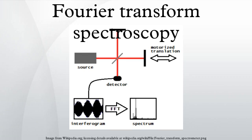Fourier transform spectroscopy is a measurement technique whereby spectra are collected based on measurements of the coherence of a radiative source, using time domain or space domain measurements of the electromagnetic radiation or other type of radiation.